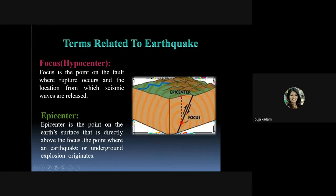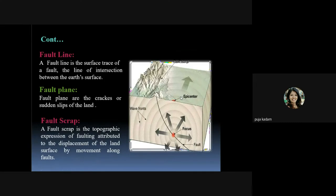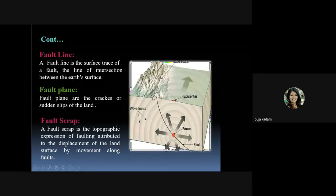The point where an earthquake or underground explosion originates is called the focus. A fault line is the surface trace of a fault — the line of intersection between the Earth's surface where two planes join each other. That particular line is called the fault line.